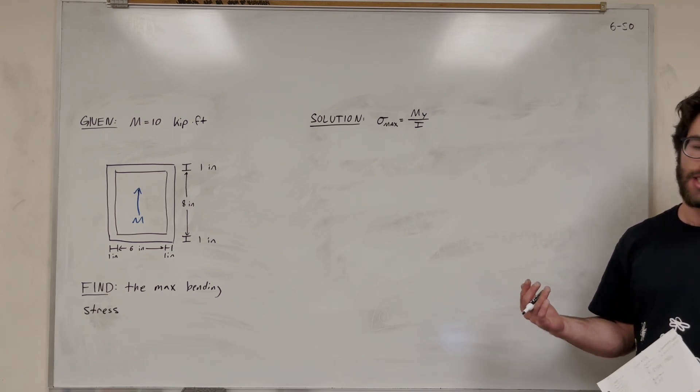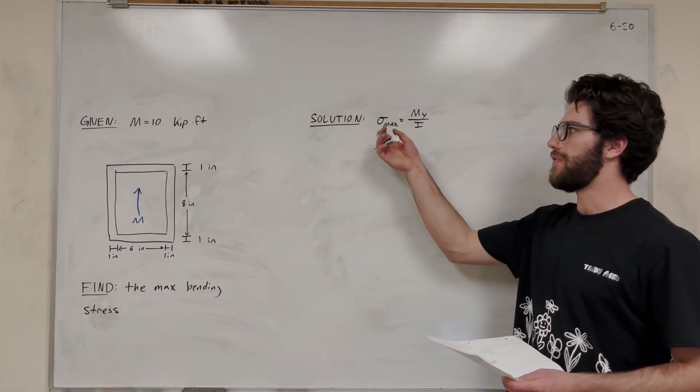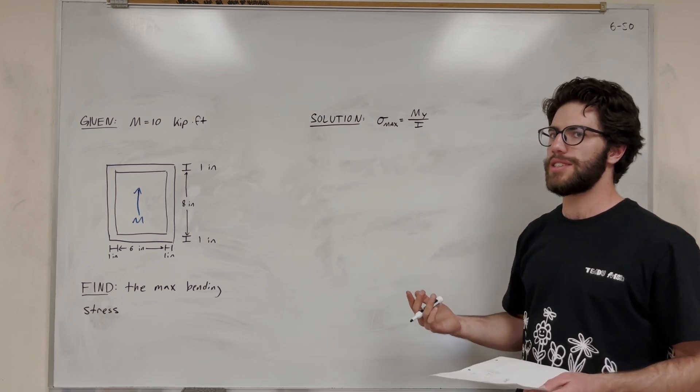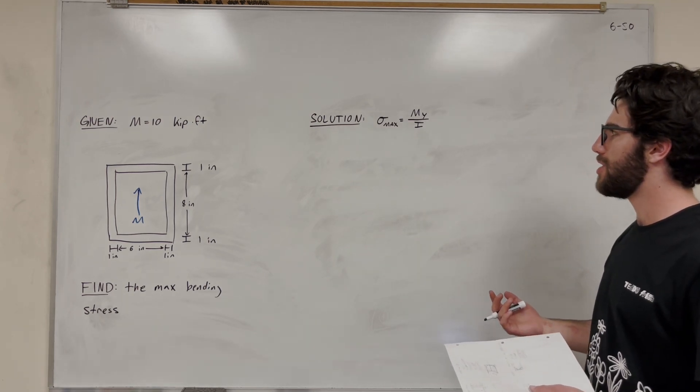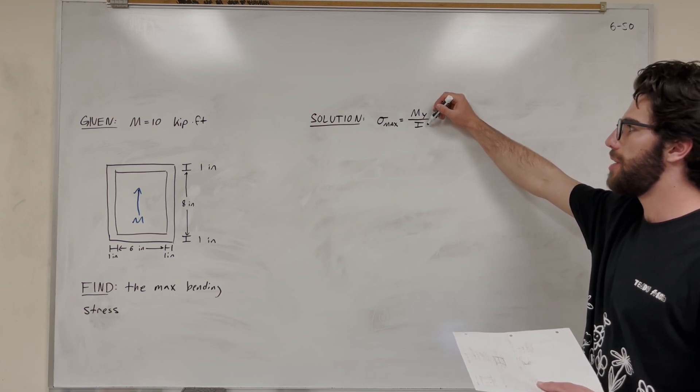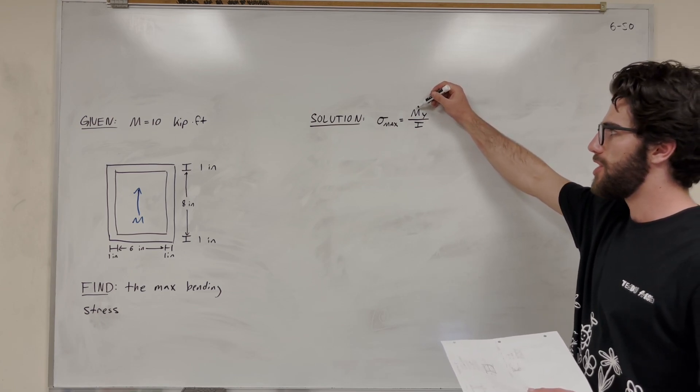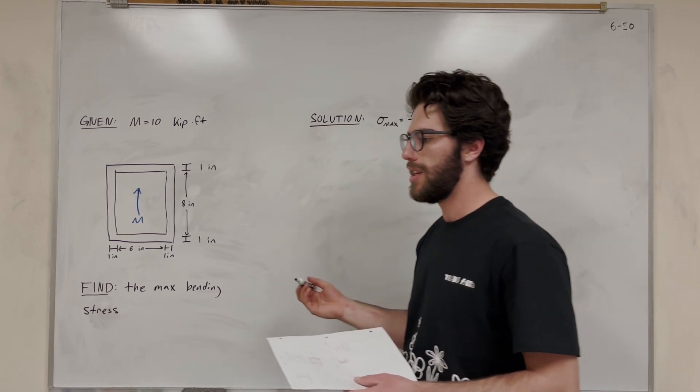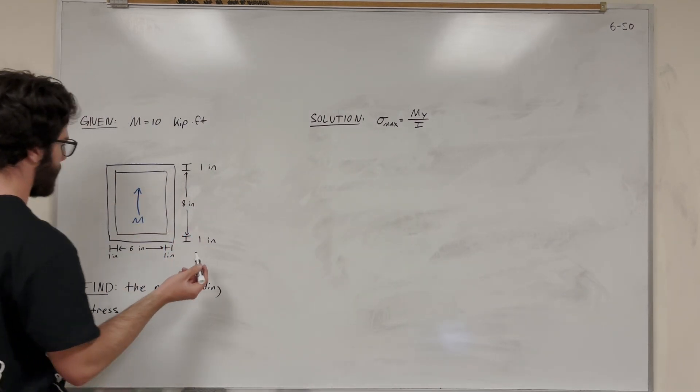So let's go ahead and do that. First of all, we want to draw that three-dimensional view. We're going to need to figure out what the stress maximum is. So let's go ahead and solve for that. The equation here is moment times y over moment of inertia. So of course, moment is given to us. Y is going to be the distance basically from the acting point.